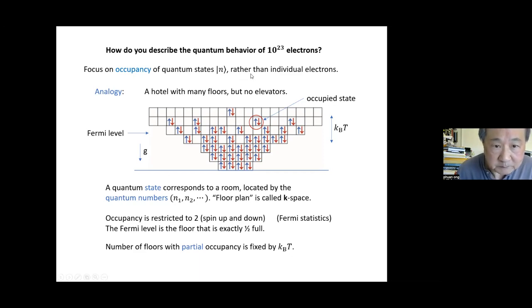Does this question have any meaning, and why would you want to do that? The trick that physicists use is to focus on the occupancy of quantum states. The analogy that best describes how a physicist looks at a chunk of metal is imagine a hotel with many floors. The number of floors could be a billion, and you focus not on the guests who are all identical—these are electrons—but rather on the occupancy of individual rooms.